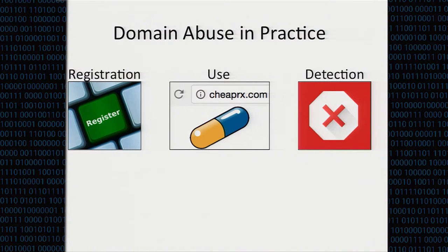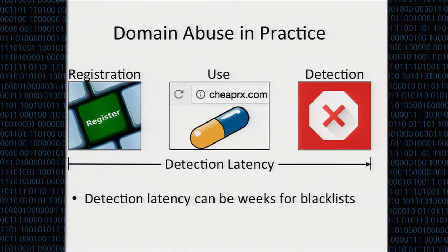The problem with this story is that detection is inherently a reaction to use, which means we can't protect users until some amount of users have been put at risk. That's pretty suboptimal. There's an inherent detection latency between when a domain is first registered and when user protection actually takes effect, and for many blacklisting techniques that detection latency can be on the order of weeks.